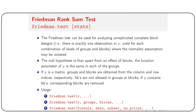The Friedman test can be used for analyzing the unreplicated complete block design, where there is exactly one observation per combination of levels of groups and blocks, and normality assumptions may be violated. The null hypothesis is that, apart from a block effect, the location parameter of y is the same in each group. If y is a matrix, groups and blocks are obtained from columns and row indices respectively, and NAs are not allowed in groups and blocks.